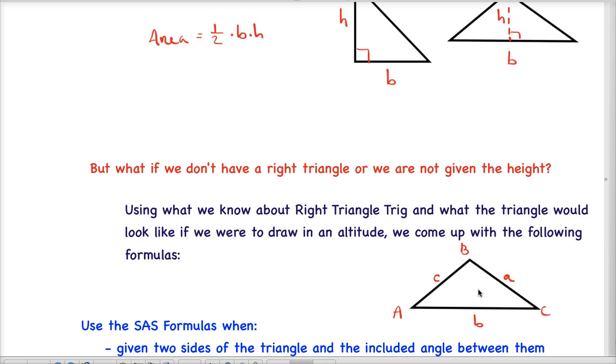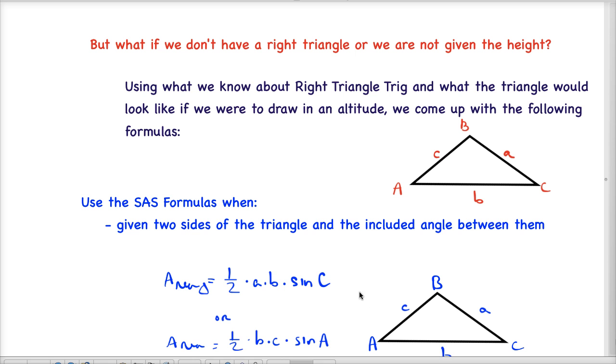I don't see an altitude drawn in here, but if I did draw in an altitude right here, I would have an h and then I'd have a right triangle. Then I'd be able to say the sine of C equals opposite over hypotenuse, which is h over a. Then if I were to take that and solve it for h and plug it in, what I would end up coming up with is a formula that looks like this.